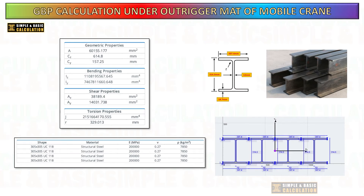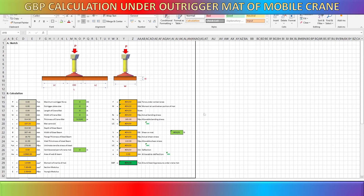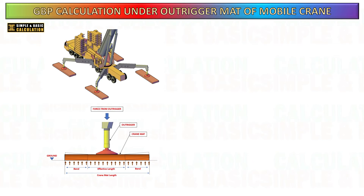These are the properties of the crane mats we are using for our calculation. The data is derived from SkyCiv software. We will also perform the manual calculation for the I-beam moment of inertia at the Z-axis. A spreadsheet has been developed for computation purposes, and later in this video you will see both the manual calculation and the utilization of this spreadsheet.